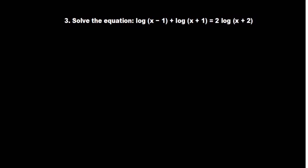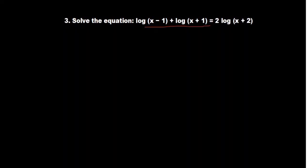For the third question, you can pause the video and try it out. From the laws of logarithms we've covered, we can attempt equations. On the left-hand side there is an addition sign with logs of the same base, so we can combine them into a single log by multiplying the arguments: log of (x minus 1)(x plus 1). When we have addition of logs with the same base, we can maintain one log and write it as a product.